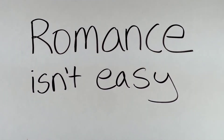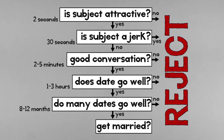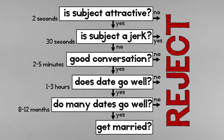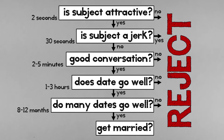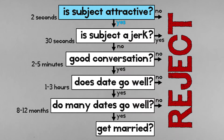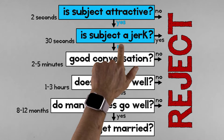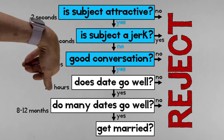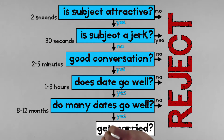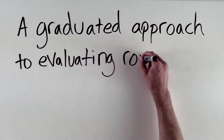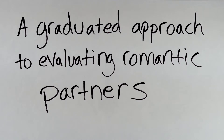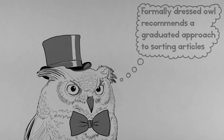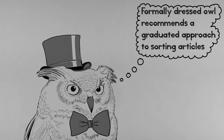Romance isn't easy, so I made a flow chart. Imagine you see someone across the room being rude to a waiter while hollering into a mobile phone. If you're like me, it doesn't matter how attractive that person is — if they're behaving like a jerk, we're done. Now imagine you see someone paying for a stranger's coffee. That's someone I might like to have a conversation with. If the conversation goes well, maybe we go on a date; if several hundred dates go well, maybe we get married. This is a graduated approach to evaluating romantic partners — and a graduated approach is a really good way of efficiently sorting through lots of something, like human beings or articles.